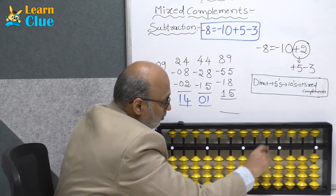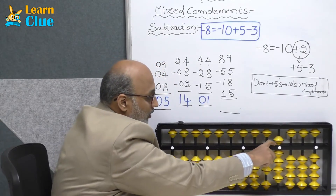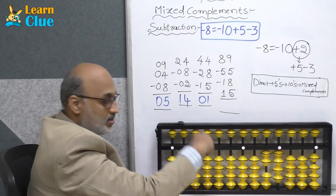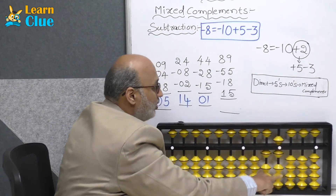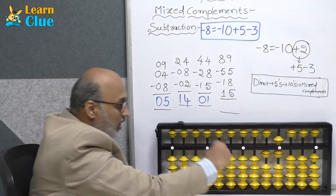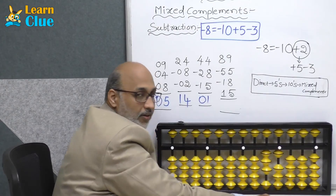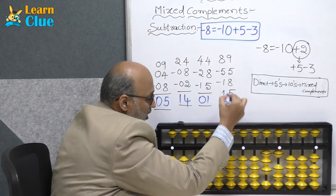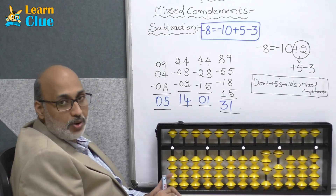Next problem: 89 minus 55, which is direct. Minus 18: minus 10 minus 8. Minus 8 is nothing but minus 10 plus 5 minus 3. Now they are asking plus 15: plus 10 plus 5. Plus 5 is nothing but minus 5 plus 10. The answer is 31. This is how you are supposed to practice.